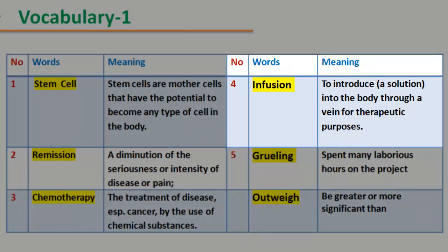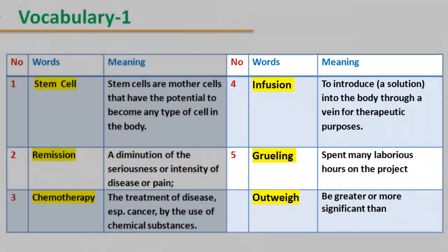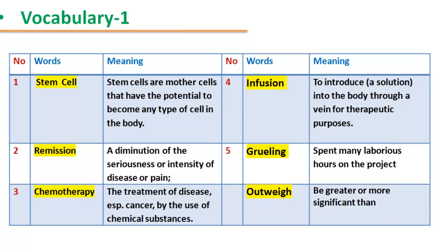Number 4 — Infusion: to introduce a solution into the body through a vein for therapeutic purposes. Number 5 — Grueling: spent many laborious hours on the project. Outweigh: be greater or more significant than.